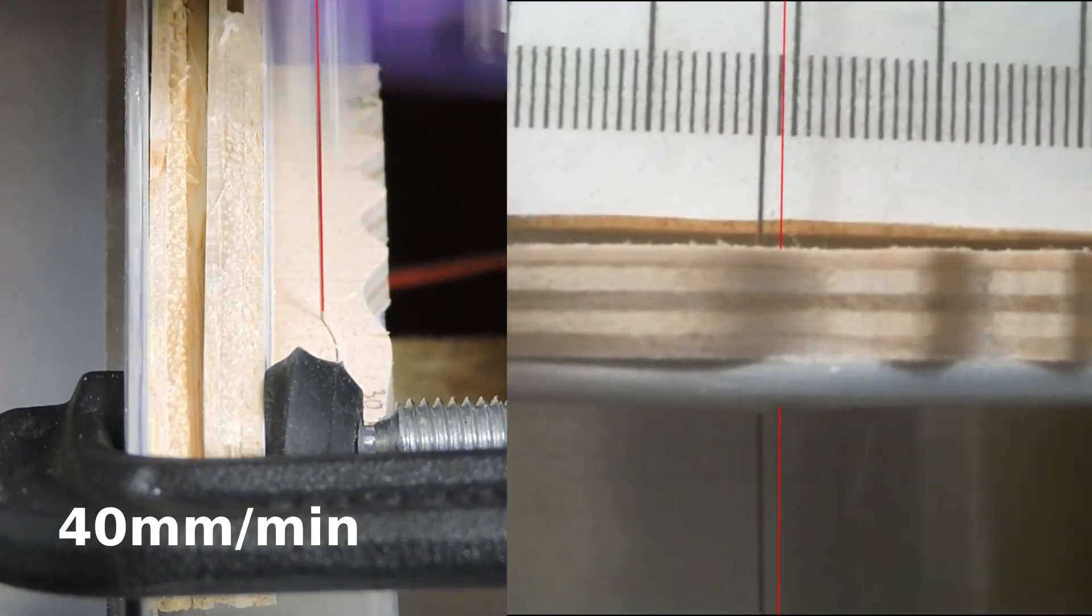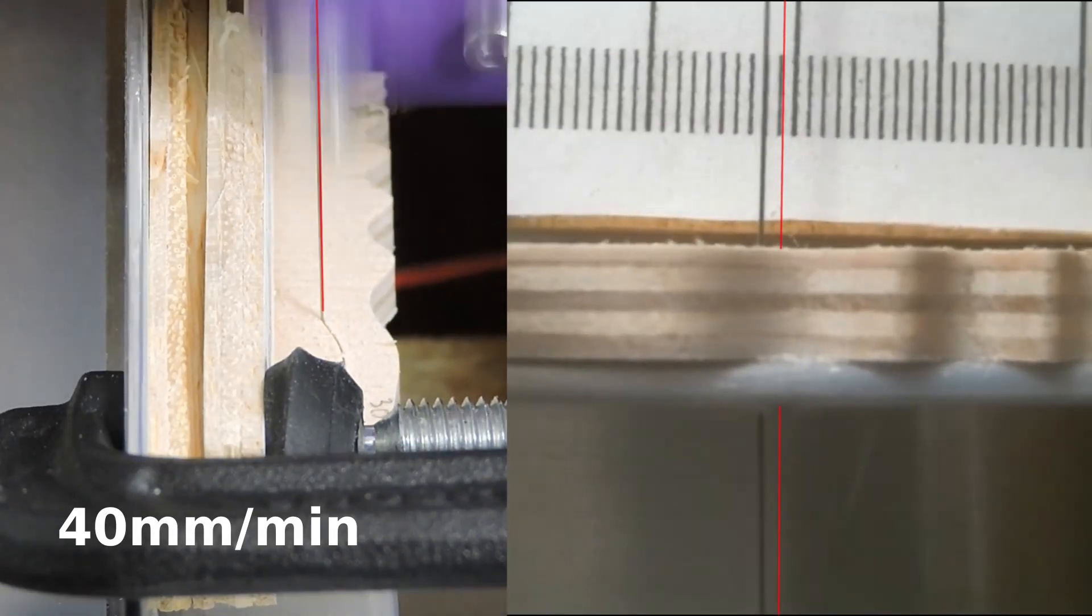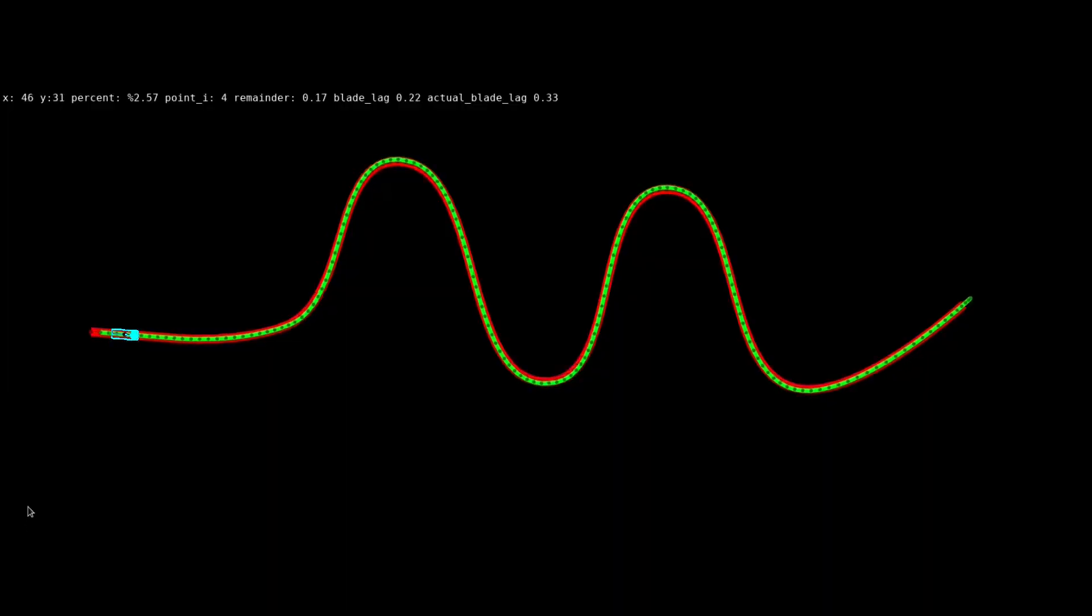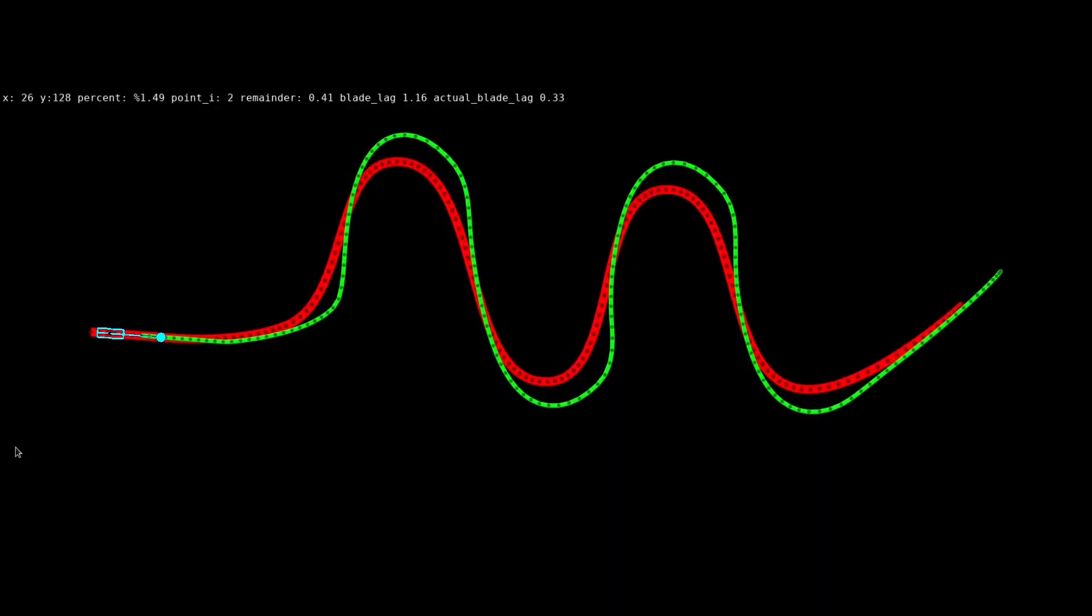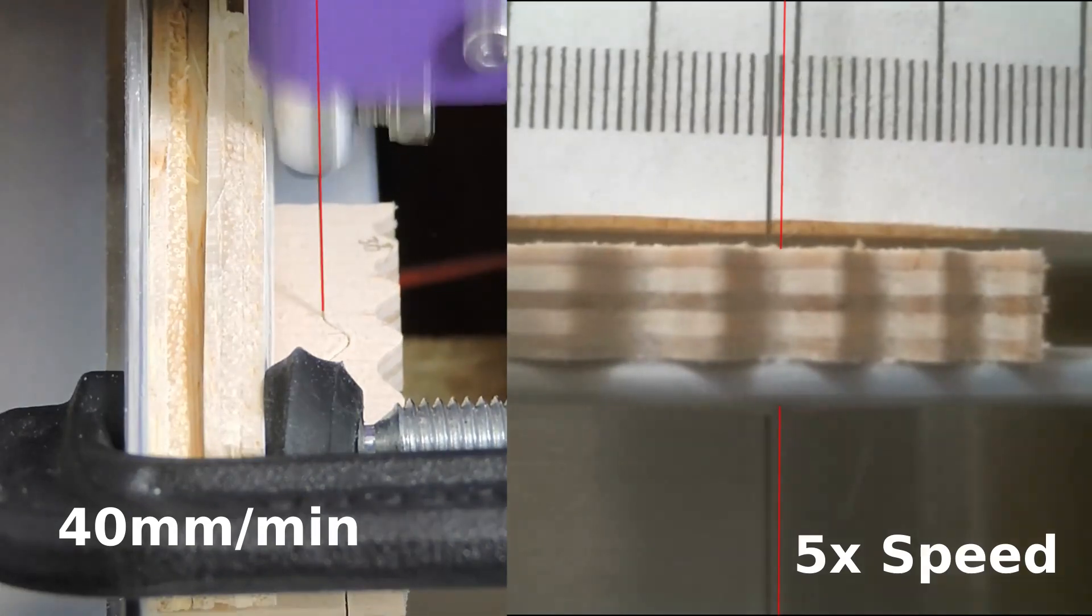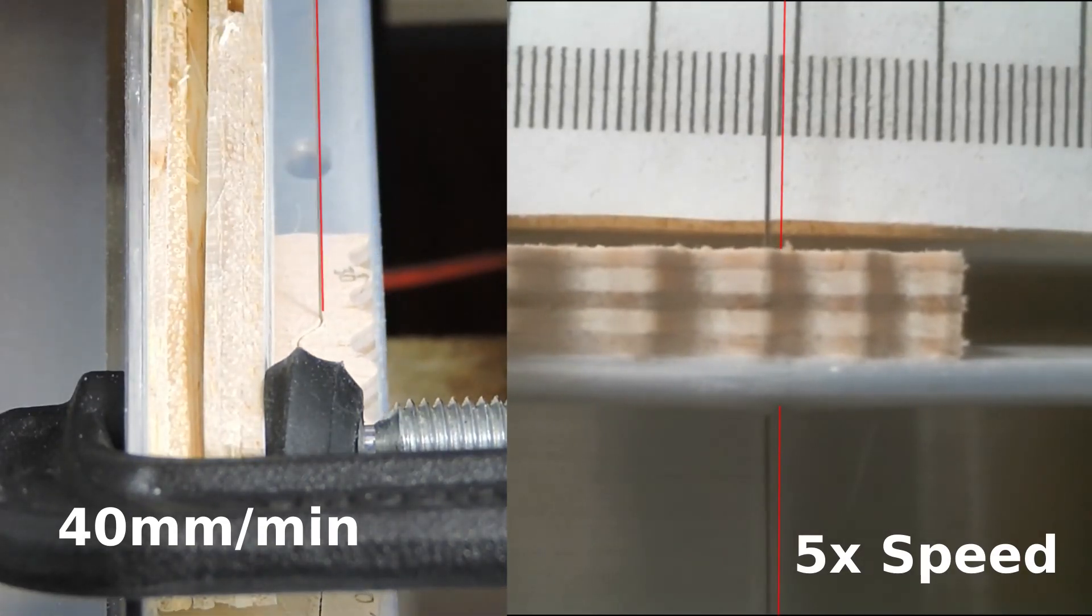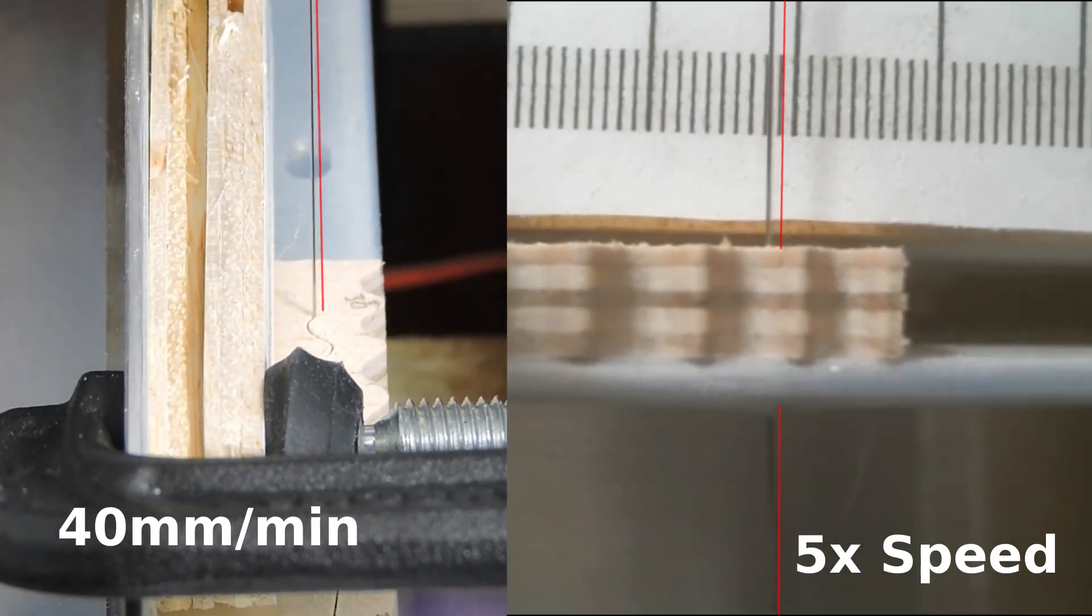In my last video, I showed how the blade lags behind the machine position and that this causes cut inaccuracies. We can't account for it with a static offset because the amount of blade lag changes during the cut, so we'd like a way to track the blade's position in real time.